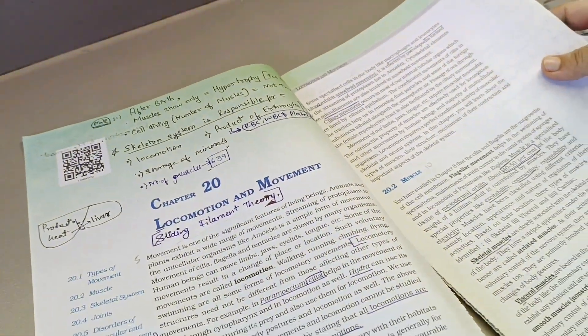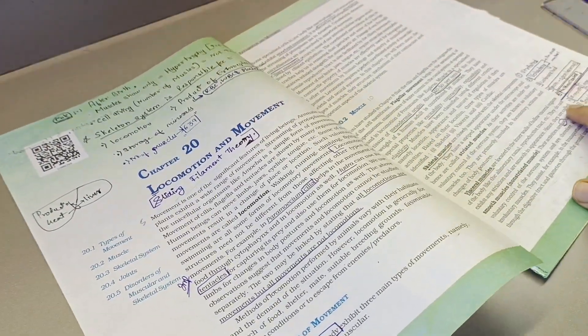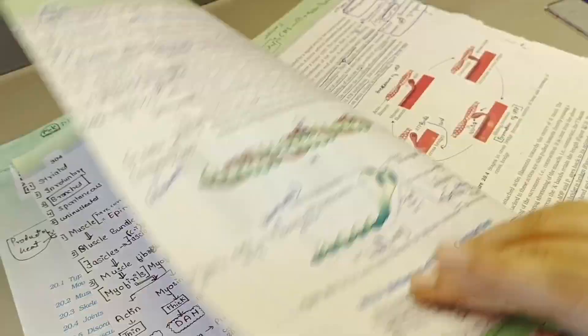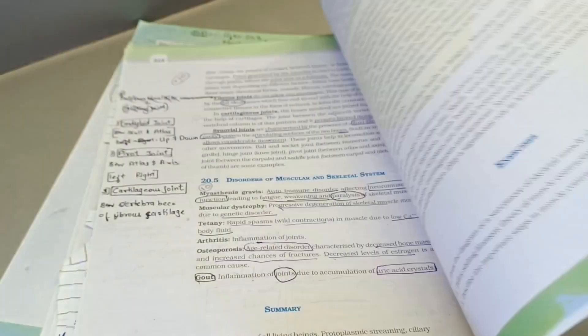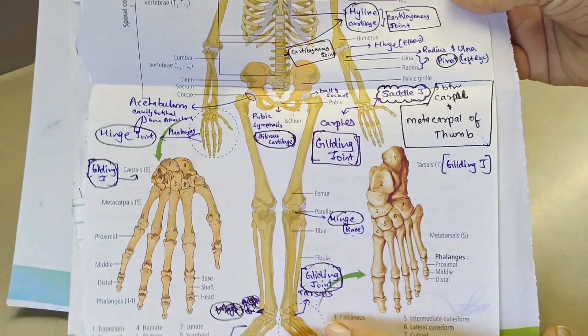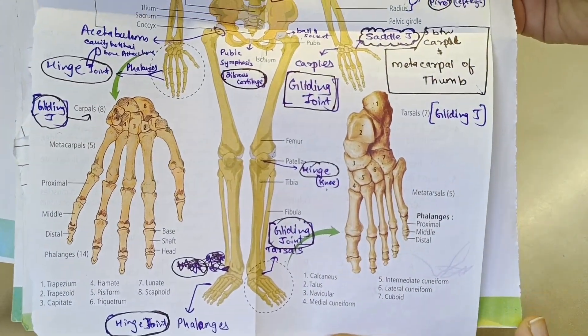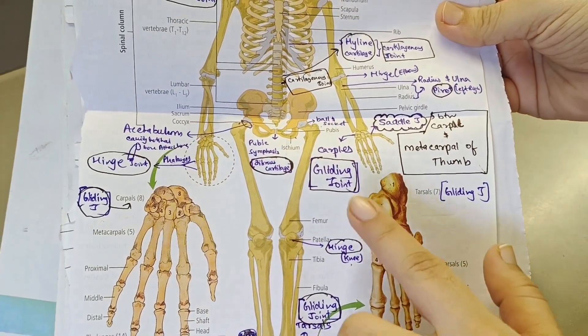It's the locomotion and movement chapter, and this is how my NCERT looks like. The most interesting thing is present on the back side.